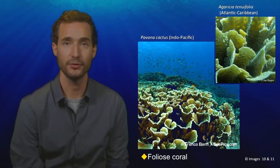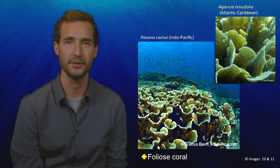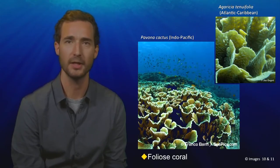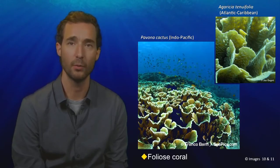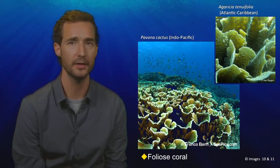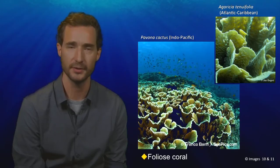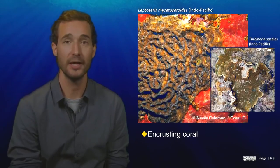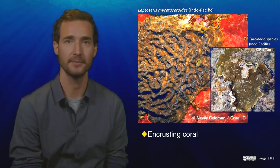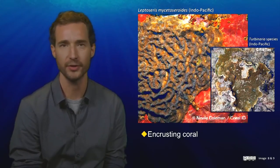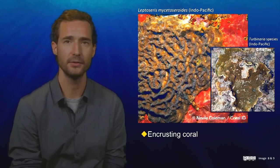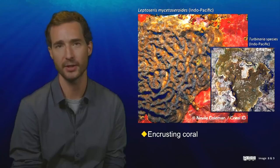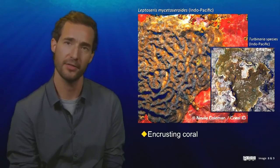Next we have foliose corals, whose colonies form thin sheets. A good way to remember the name is to think of the word foliage, like the leaves of a bush. The colony's walls are thin and leaf-like and usually stand upright towards the sea surface. The last of our coral life forms is called encrusting, as the colony forms a crust on the reef. Unlike plate corals, they do not have a rim like a plate, but tend instead to adhere closely to the substrate and form a thin veneer.